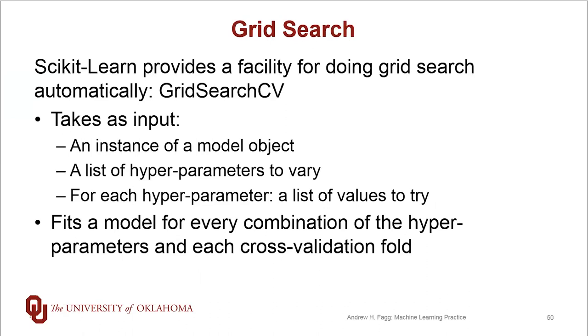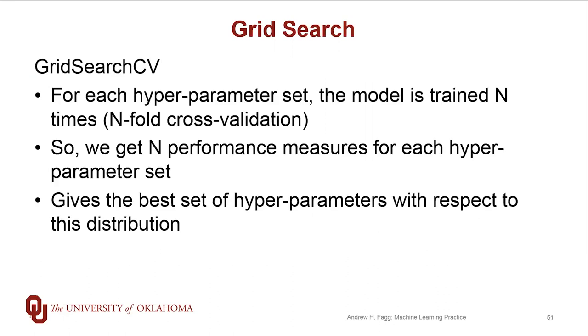Scikit-learn does provide a facility for doing grid search for you. One of those facilities is called GridSearchCV. This class takes as input an instance of a model object. So you might have ridge regression, you might have lasso, you might have elastic net. It also takes as input a list of hyperparameters to vary, and then for each of those hyperparameters, a list of values to actually try. It then does the full Cartesian product experiment for you. So it tries every possible combination of hyperparameters, but on top of this, it also performs cross-validation for you. So for every combination of hyperparameters, we're actually building n different models and computing n different performance metrics for each of those grid points.